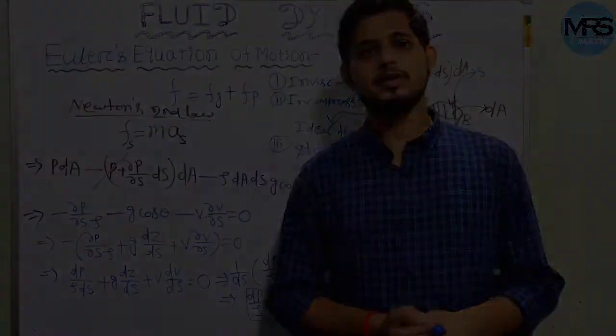Whatever we discussed in the last class covered the basic concepts of fluid dynamics. In this class I will derive Euler's equation of motion. We discussed that Euler's equation of motion is the sum of force due to gravitation and force due to pressure: F = Fg + Fp.